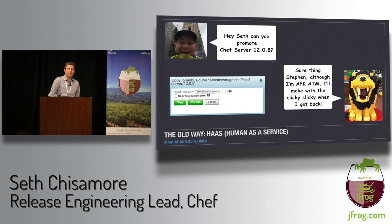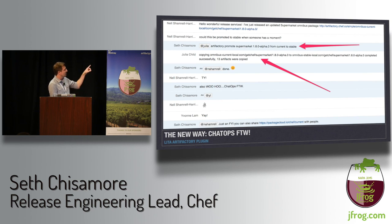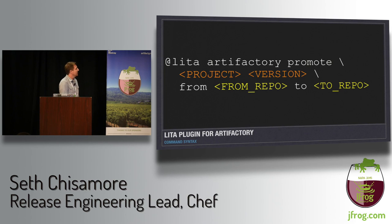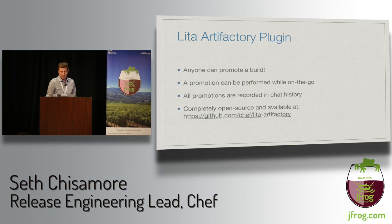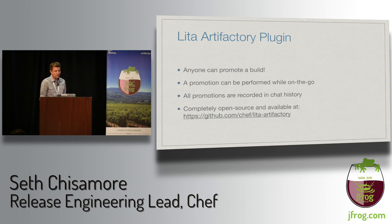The new way: we just tell the Lita bot to do the promotion in chat. The command is 'lita artifactory promote', give a project like chef-server, a version like 12.0.8, and then the from and to repo. It just does its thing. Anyone can promote a build, promotions can be performed on mobile chat clients, and all promotions are recorded in chat history. This plugin is also open source and uses the Artifactory Ruby client under the covers.